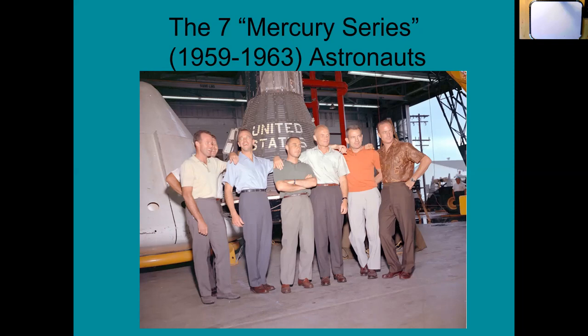We were going to beat the Russians with a person into space - we had to get a person up there before them. They beat us with an animal and with Sputnik, but if we get a person into space, we take first place. What we did was select these astronauts, who were actually test pilots for the military. It was called the Mercury series. There's a movie called The Right Stuff - I'll give you a few points extra credit if you watch it and write a paragraph. It's a long movie, over three hours, and it's about these astronauts. Here are the seven Mercury series astronauts.